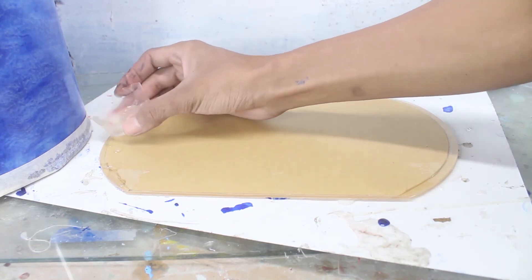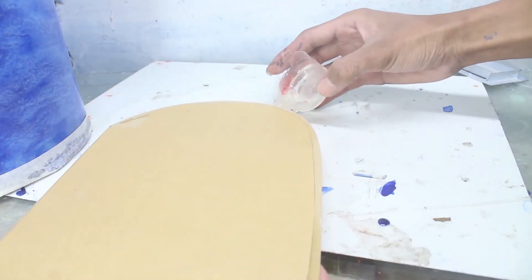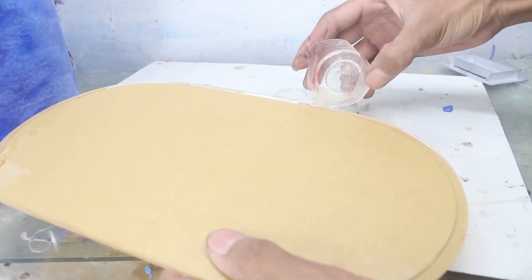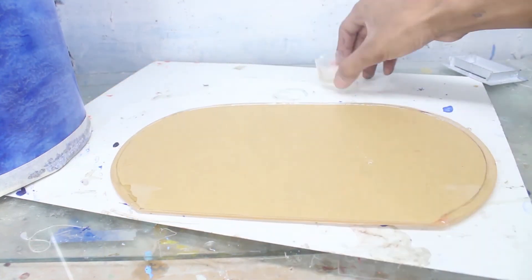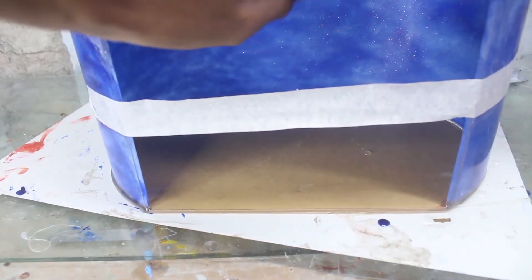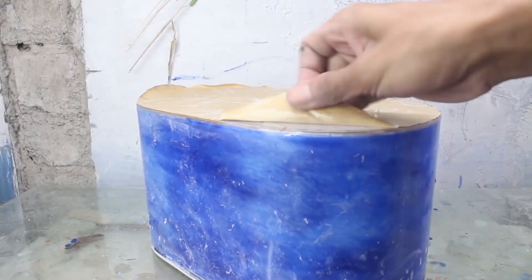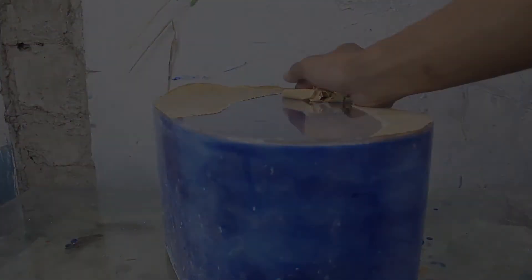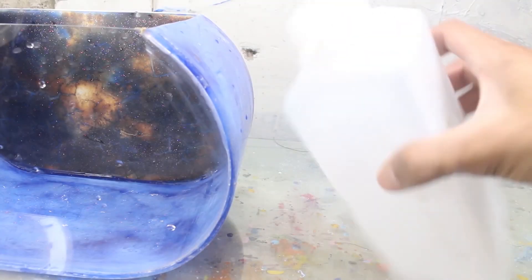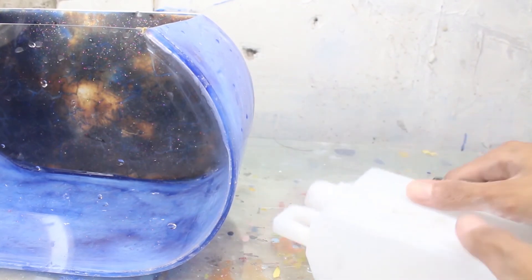Saya tuang untuk pinggirnya. Setelah merata saya kasih disini. Disini setelah kering semua, saya bukain dia. Disini saya akan memberi filter untuk bagian belakang. Disini ada box plastik bekas ya. Saya akan buang untuk atasnya disini.